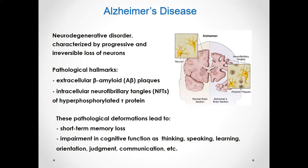A few words about Alzheimer's disease, which is one of the most widespread types of dementia. It is a neurodegenerative disorder characterized by progressive and irreversible loss of hippocampal and cortical neurons. The pathological hallmarks are extracellular insoluble amyloid beta plaques hindering communication between neurons, and intracellular neurofibrillary tangles of abnormally hyperphosphorylated tau proteins that inhibit transmission of nutrients within the neuron. These lead to synaptic degeneration and neuronal death, resulting in short-term memory loss and impairment in cognitive function.